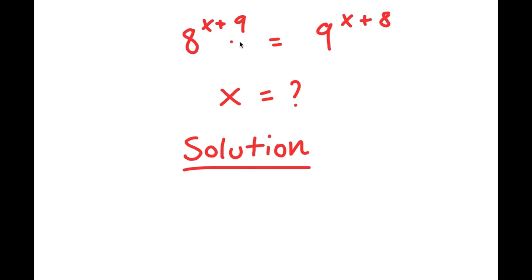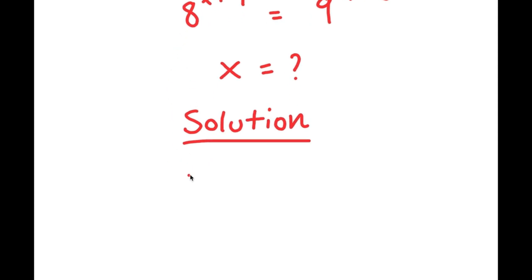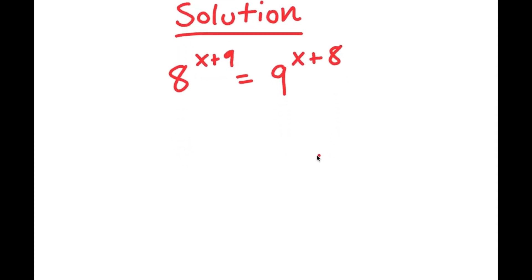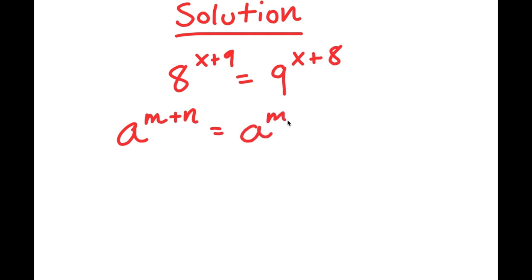I'm going to start by rewriting my equation down here so I have more solving space. My equation is 8 to the power of x plus 9 is equal to 9 to the power of x plus 8. I'm going to be using the property of exponents that states that if I have something in the form a to the power of m plus n, this is equal to a to the power of m times a to the power of n.